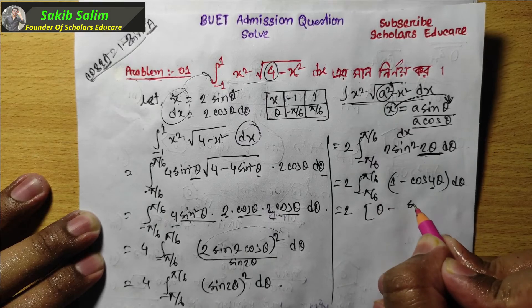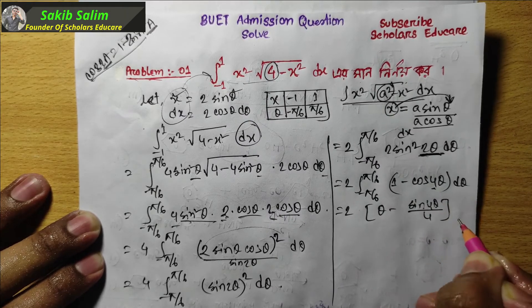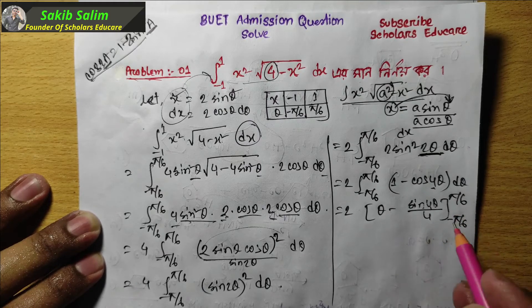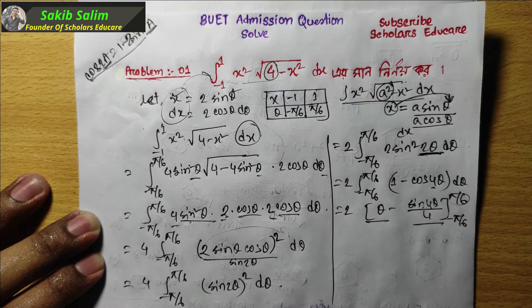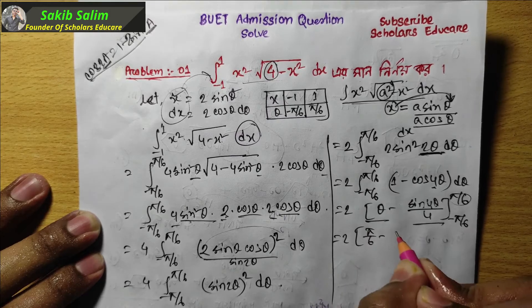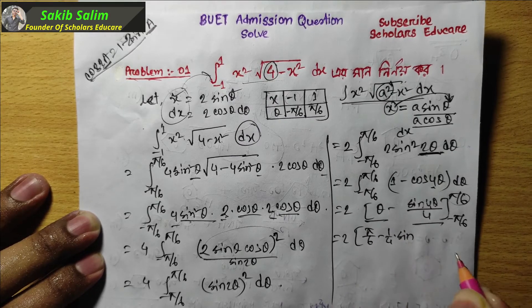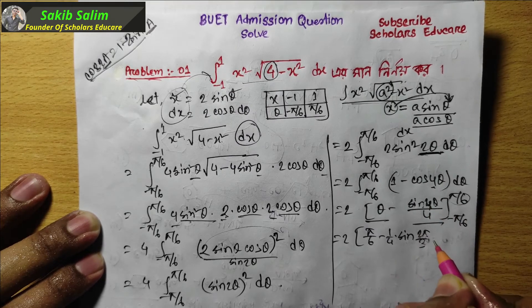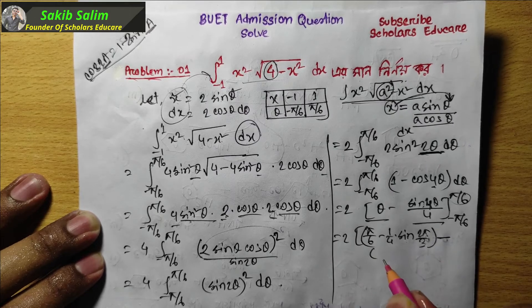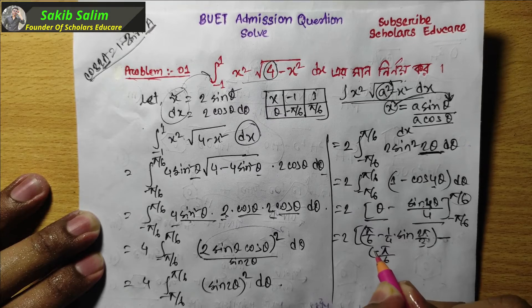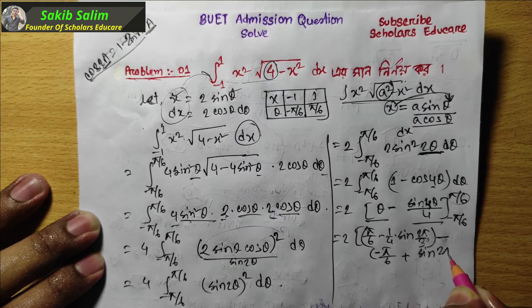We evaluate: theta minus sin 4 theta divided by 4, with limits from minus pi by 6 to pi by 6. Then we compute 2 into pi by 6, minus 1 by 4 into sin of 4 times pi by 6, which gives 2 pi by 3. Subtracting the lower limit at minus pi by 6, and adding sin of 2 pi by 3, we get our result.